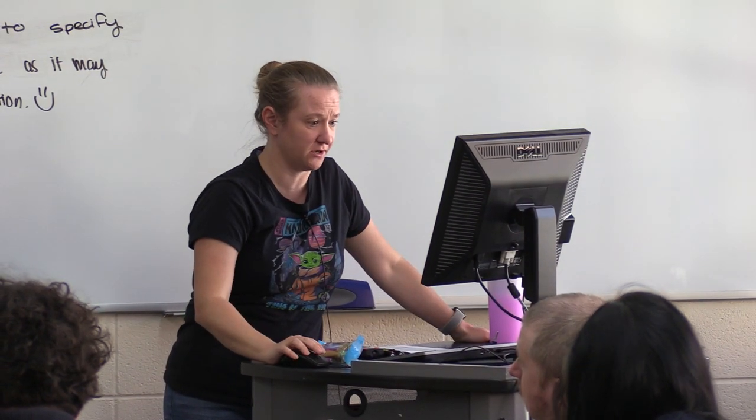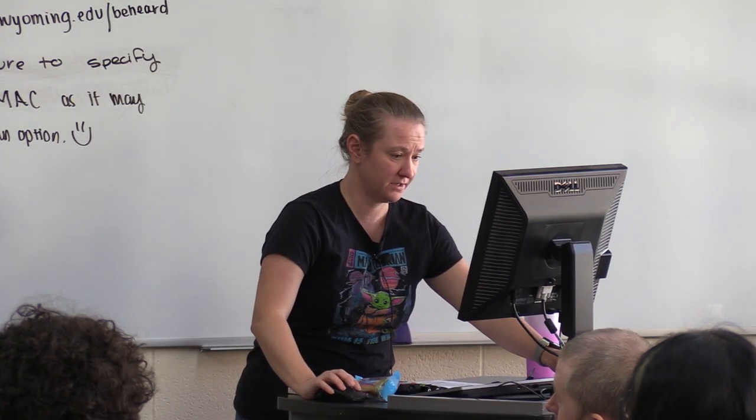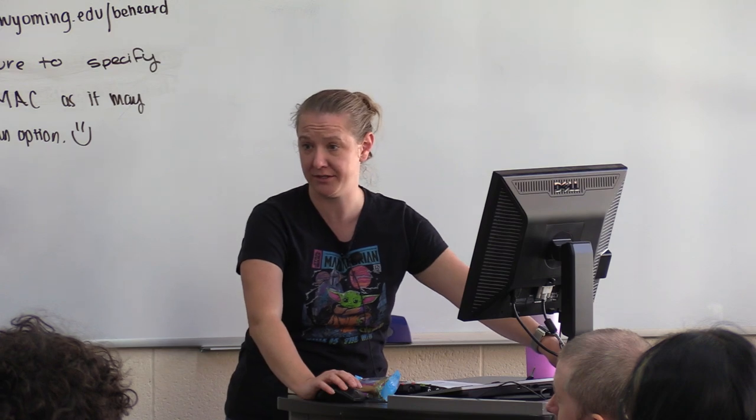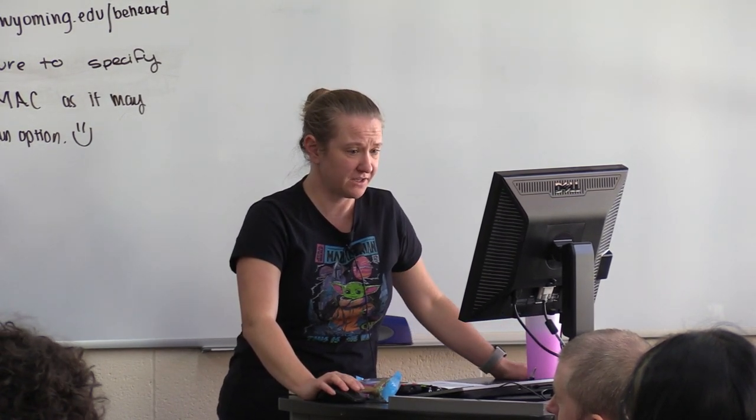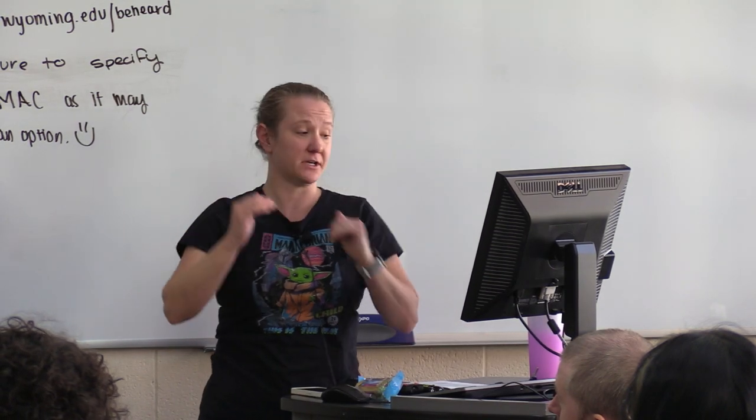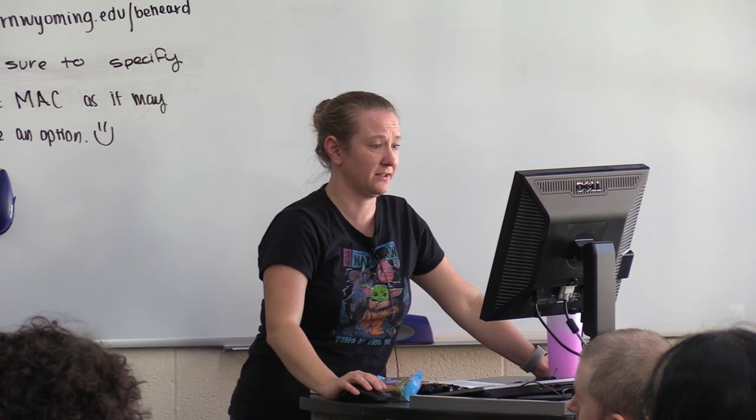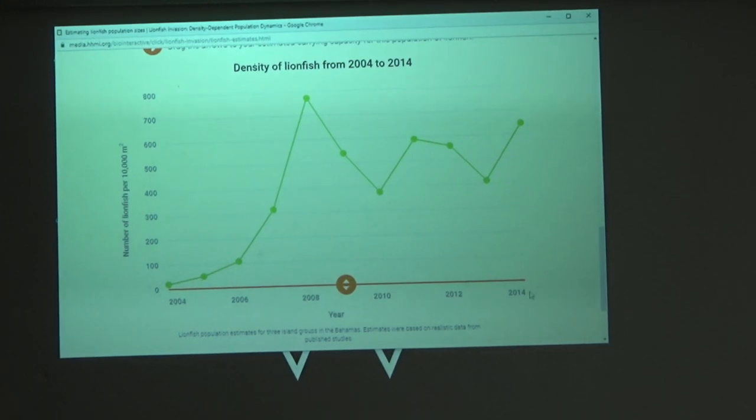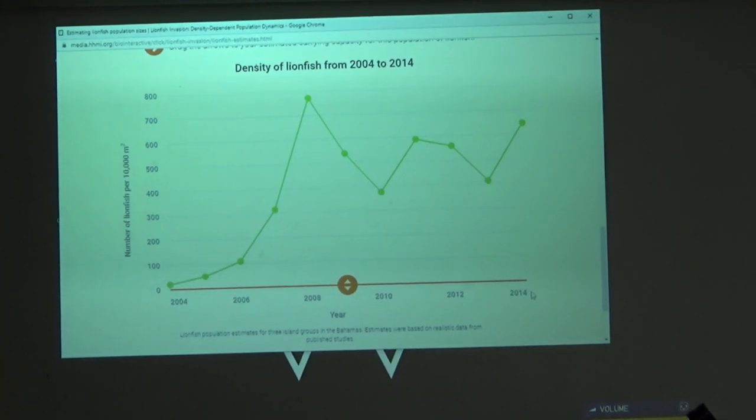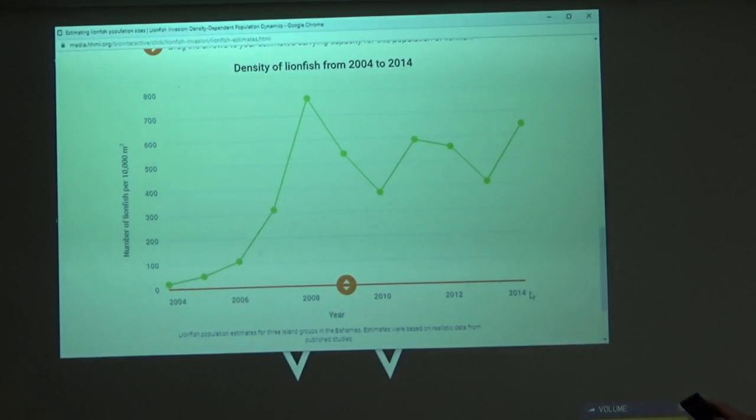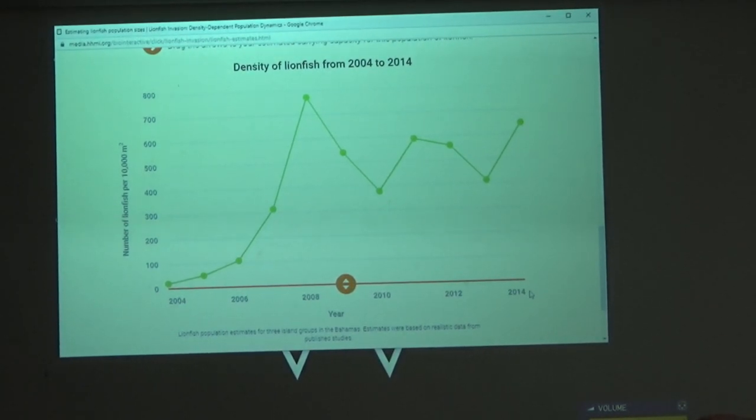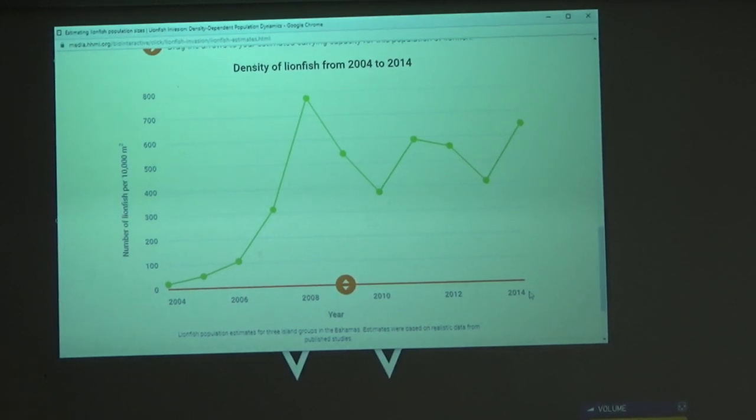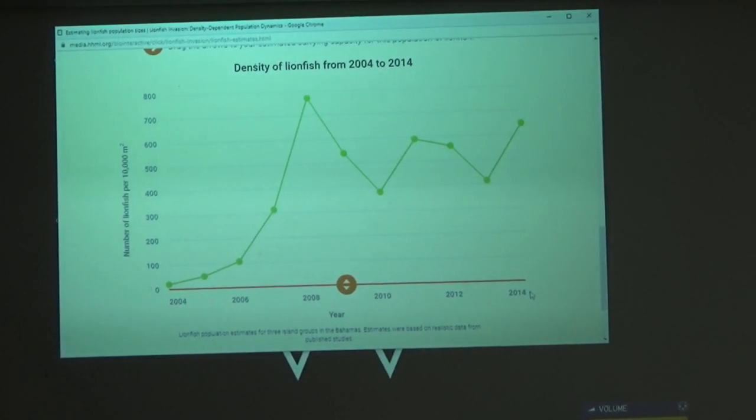So again, students are being shown the importance of these different data collection methods for population surveys. And so we're just scaffolding this background. And then we get to this great little graph here that auto populates. So this shows time on your x axis, and the number of lionfish per 10,000 meters squared. So what this is asking the students to do, and what I'm going to ask you to do, is to tell me where you think the maximum number of lionfish in this area should be.